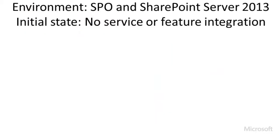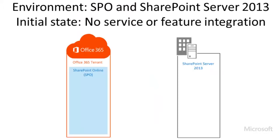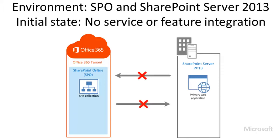Let's say that we have an environment that includes both SharePoint Online and an on-premises deployment of SharePoint Server 2013, and there's different content in each deployment. For now, the two deployments aren't connected in any way. None of their services and features, such as SharePoint Search capabilities, are integrated.